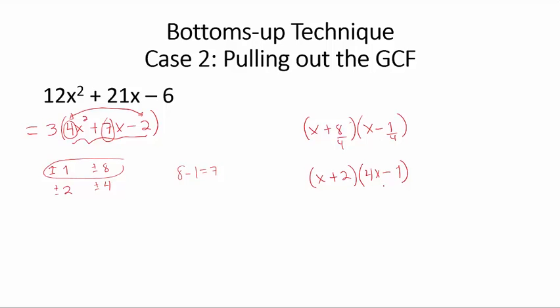Now, we claim that this is correct. Let us check: 4x² - x + 8x - 2, which is exactly what we were looking for.